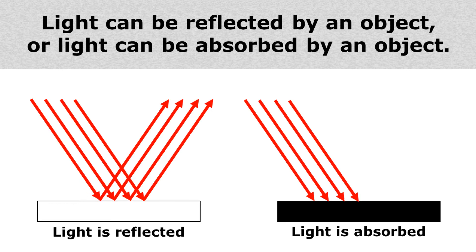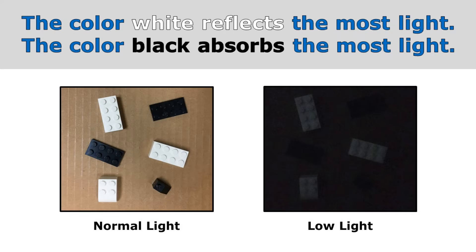The amount of light that's reflected or absorbed by an object actually determines its color. The color white reflects the most light, and the color black absorbs the most light. On the left, you can clearly see all six Legos in normal light. But when I turn the lights out, it's much easier to see the Legos made from white plastic.